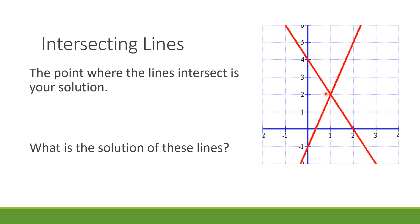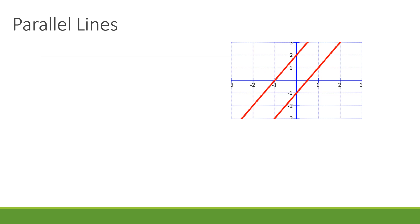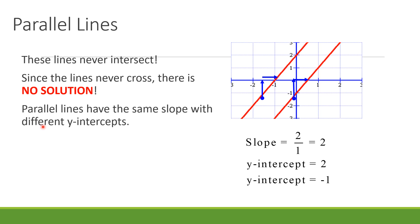We have parallel lines. These lines never intersect - they will never cross. Since the lines never cross, there is no solution. Parallel lines have the same slope but different y-intercepts, like this one. We have the same slope but different y-intercepts - one is 2, another is 1.